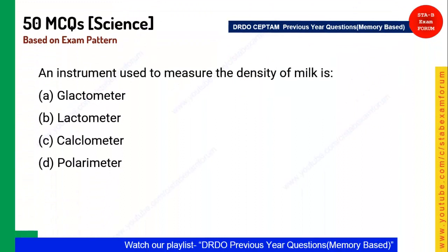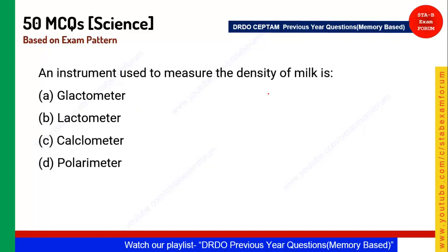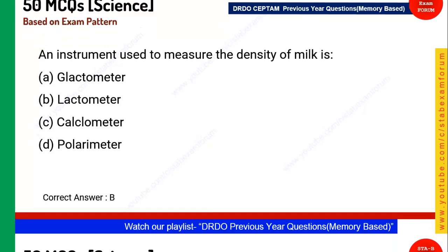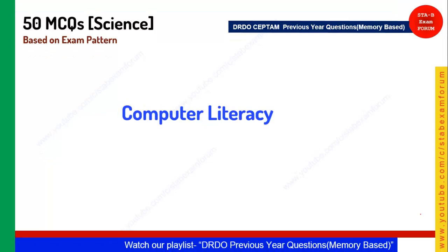Next question: An instrument used to measure the density of milk is called what? The answer is a lactometer. That completes 10 questions on science and technology.